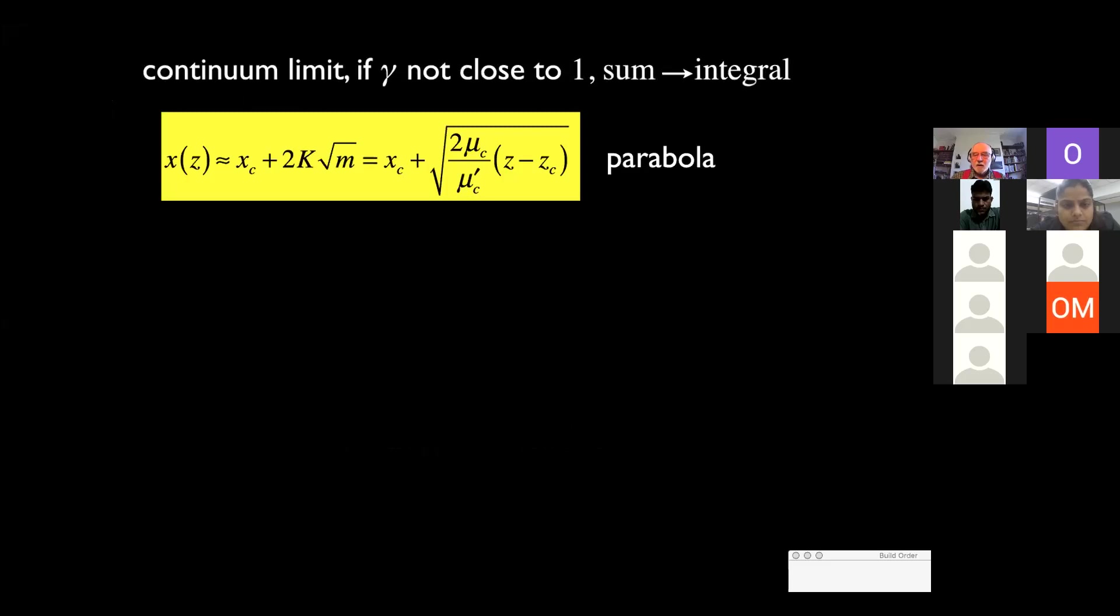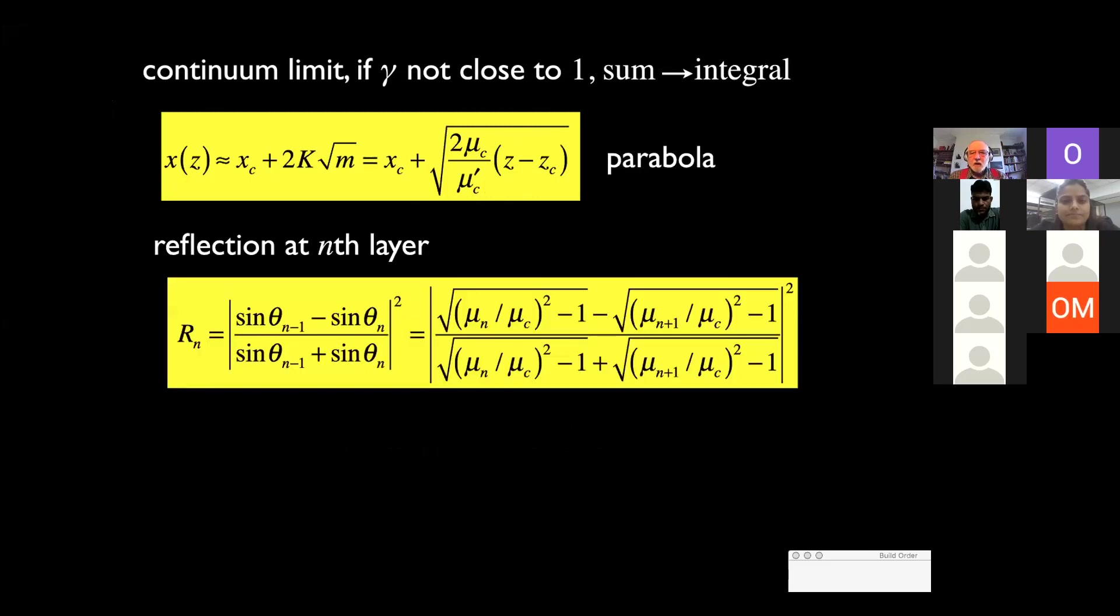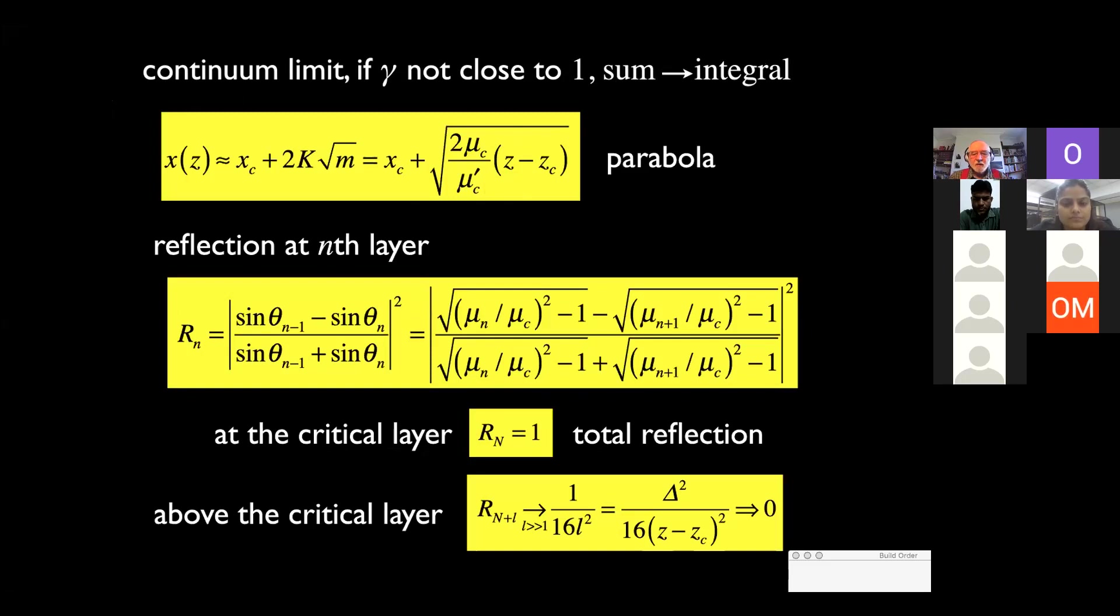Now, we want to take a continuum limit of delta going to 0. If gamma is not too close to 1, you can replace the sum by an integral, and then you get the parabola, which you would expect. You need to check the reflection at the layers, because the discreteness is an artifact that you've introduced. And indeed, at the critical layer, the total reflection is total. And above the critical layer, in the limit of small stratifications, the reflections are zero.